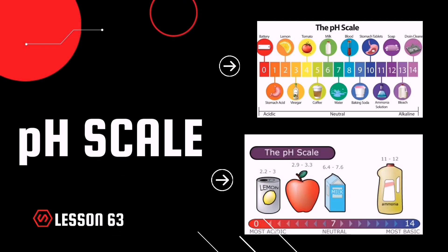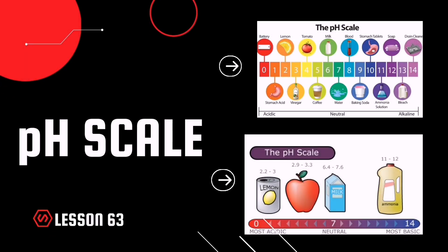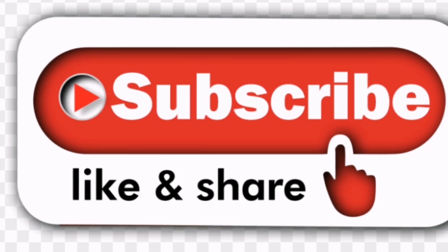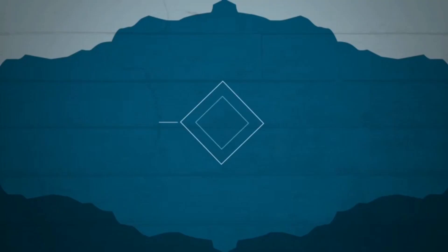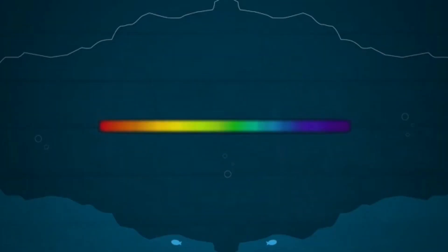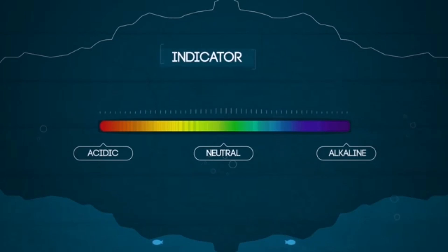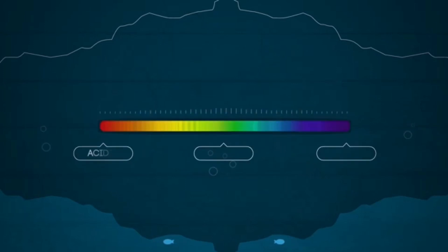Do you know the pH value of a neutral solution? How about the milk you're drinking? In this video we're going to have a look at the pH scale and some simple indicators of acids and alkalis. We can tell whether something is acidic, neutral, or alkaline by using an indicator.